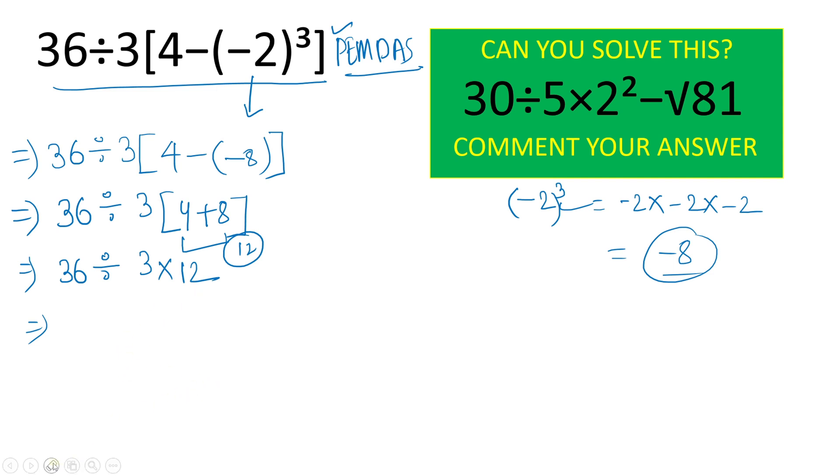So how to solve it correctly? I will show you here. From here, we will solve left to right because multiplication and division have the same priority. Again, we will solve for this division which is 36 divided by 3 will give result here what? 12.